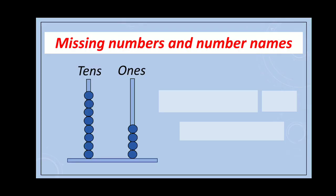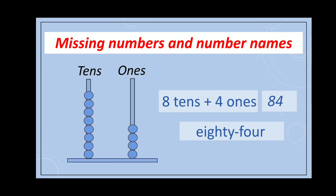Missing numbers and number names. Here in this abacus: one, two, three, four beads on ones, and one, two, three, four, five, six, seven, eight beads on tens. So eight tens plus four ones makes the number 84. And the number name is eighty-four — E-I-G-H-T-Y-F-O-U-R — 84.